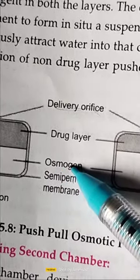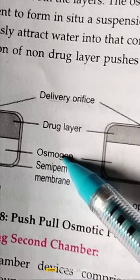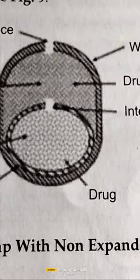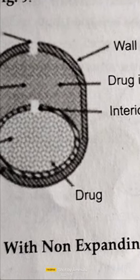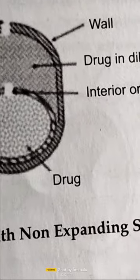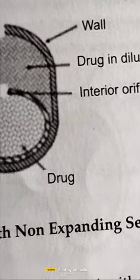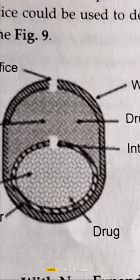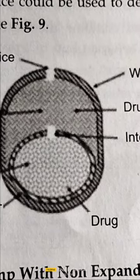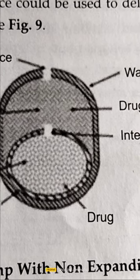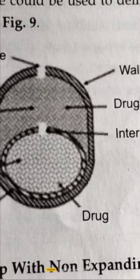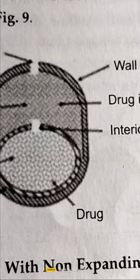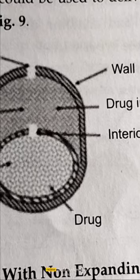The third category is the osmotic pump with a non-expanding second chamber. This category of multi-chamber devices comprises systems containing a non-expanding second chamber, and can be divided into two subgroups depending upon the function of the second chamber. In the first device, the chamber is used to dilute the drug solution released into the body in cases where the drug is released in concentrated form.